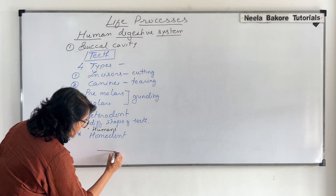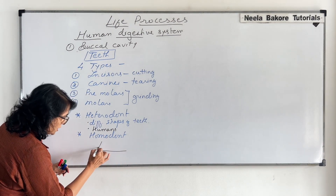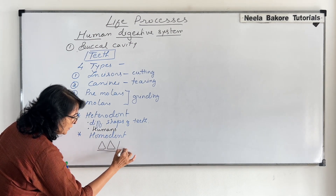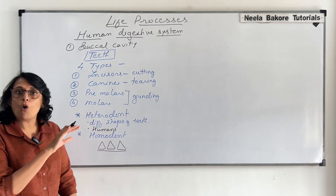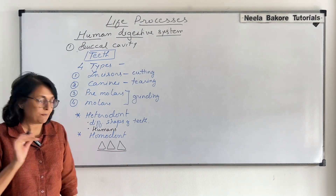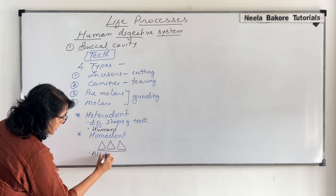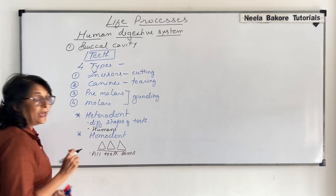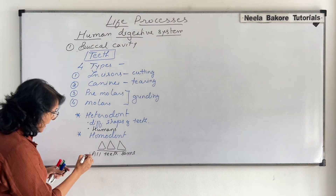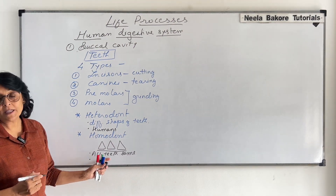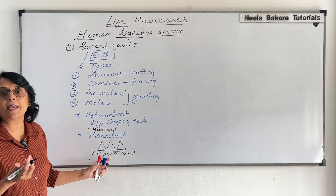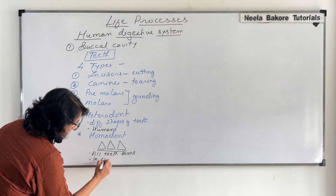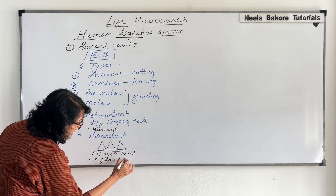Homodont means all teeth are of the same type. For example, suppose all teeth in the jawbone are triangular — the first, second, and third are all triangular. So all teeth are the same type in shape, size, and structure. This type of dentition is seen in fishes or frogs.